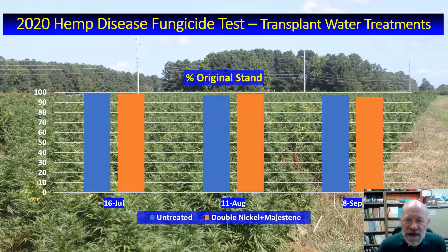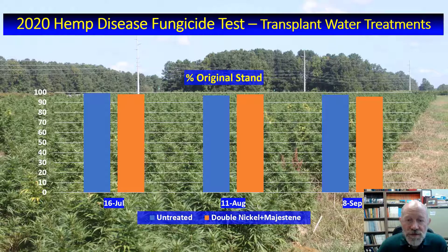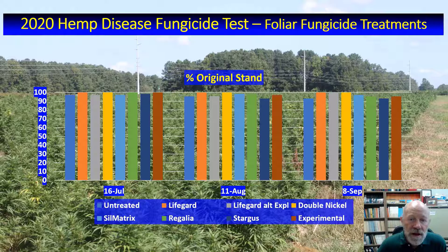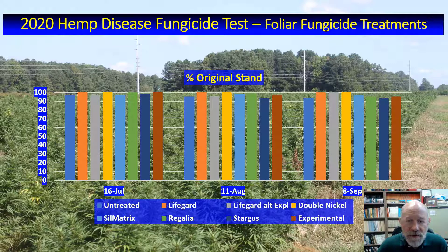We're also conducting a CBD hemp field study at the Southern Piedmont Center in Blackstone this year, in which we're looking at transplant water treatment and foliar fungicides for disease control. So far we've seen basically no difference in plant stand resulting from adding double nickel and majestine to the transplant water. Likewise, we're comparing eight foliar fungicide treatments for hemp disease control, each applied to plots with and without a transplant water treatment. So far, none of these treatments have affected how many plants are living this far into the growing season.